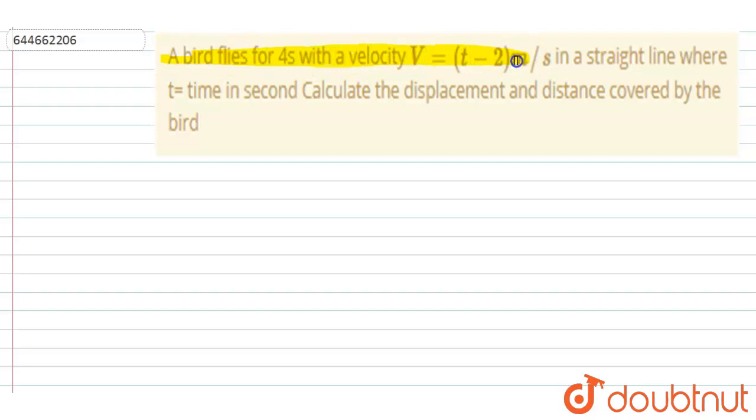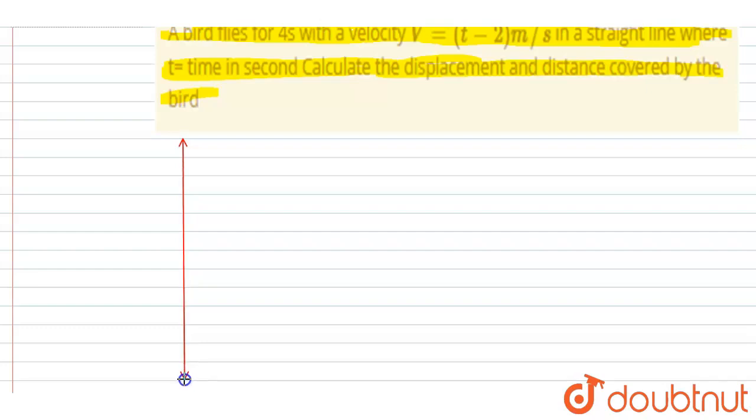Hello everyone. A bird flies for four seconds with velocity V equals (t minus 2) meter per second in a straight line, where t is time in seconds. Calculate the displacement and distance covered by the bird.